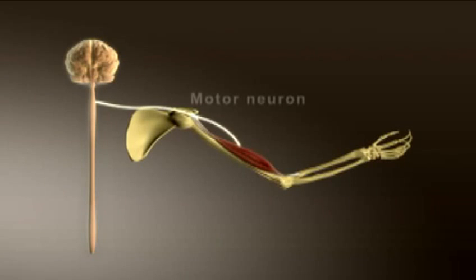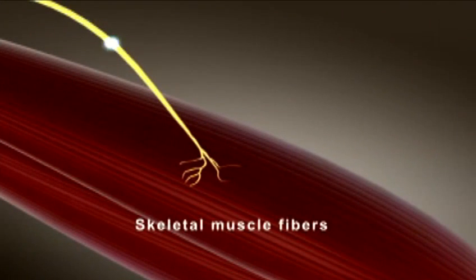Typically, a single motor neuron arising in the brain or spinal cord conducts action potentials that travel to hundreds of skeletal muscle fibers within a muscle.